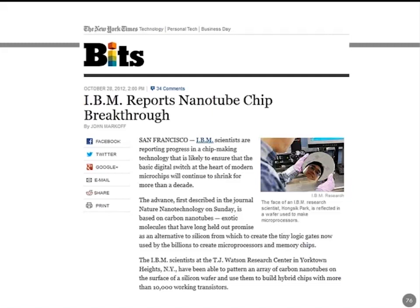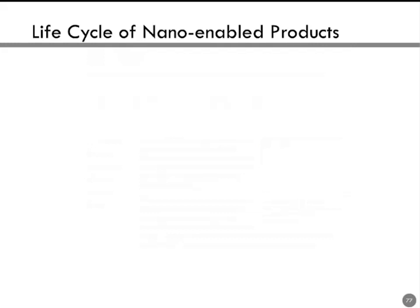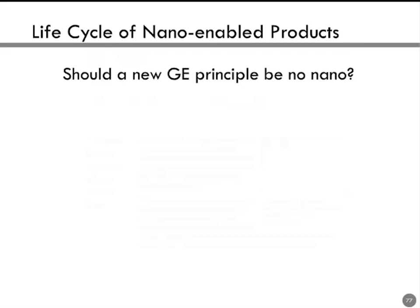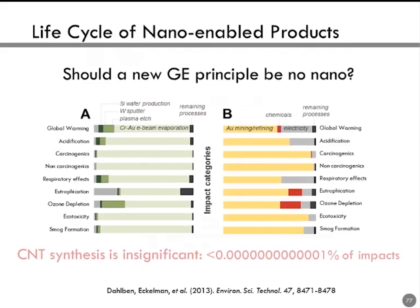Nanotechnology is being introduced in many types of electronics. We've gotten questions that basically ask: should a new green engineering principle be 'no nanotechnology,' given that it's very energy and materials intensive to produce nanomaterials? However, results really depend on how the CNTs are used. In one analysis for an electronic switch, the effects of CNT synthesis were insignificant — a very small percentage. Just because you do a life cycle assessment of a material does not mean it's a universal study; you still need to be very sensitive to the context where these materials are being used.